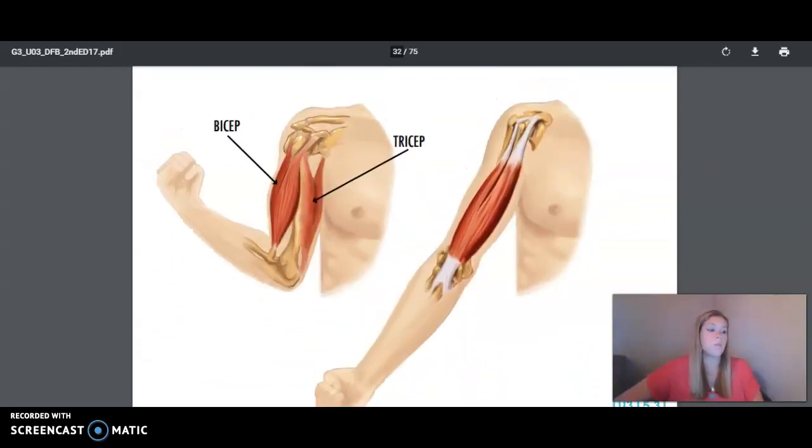Most muscles work in pairs. Muscles only pull on bone. They cannot push. As your muscles pull on bone, they contract or get shorter. In order to relax or lengthen, muscles need a partner to pull the bone in the opposite direction. Paired muscles never pull at the same time. One pulls, the other relaxes. One relaxes, the other pulls.